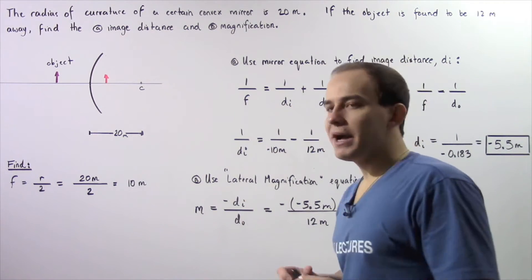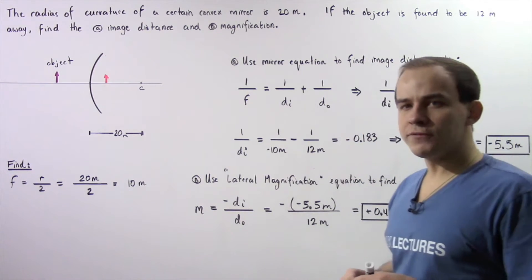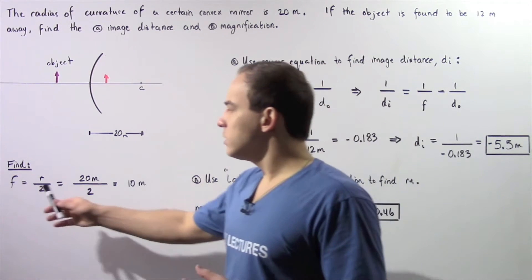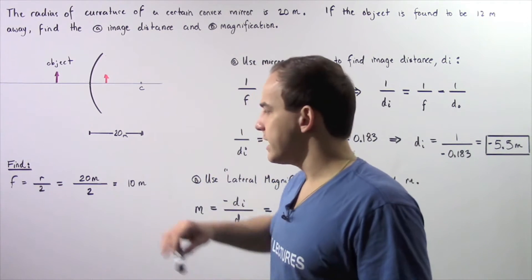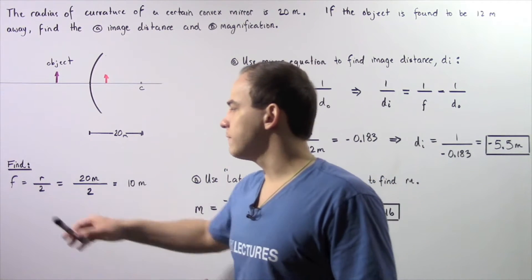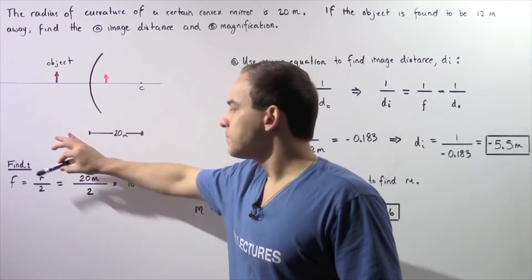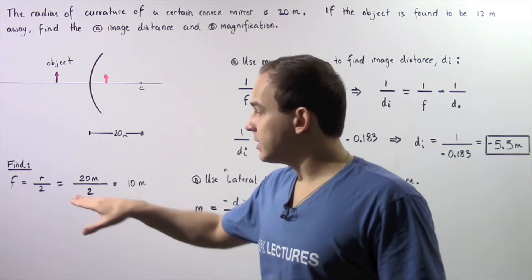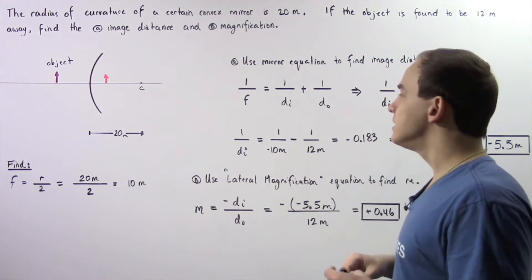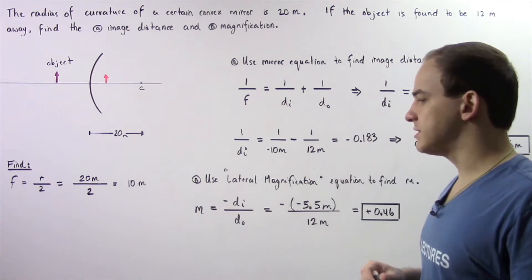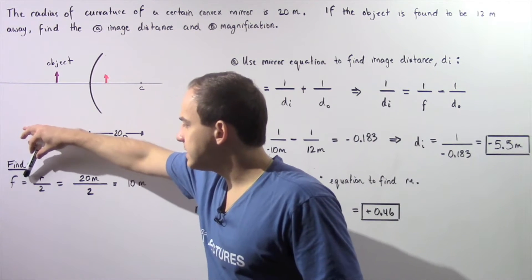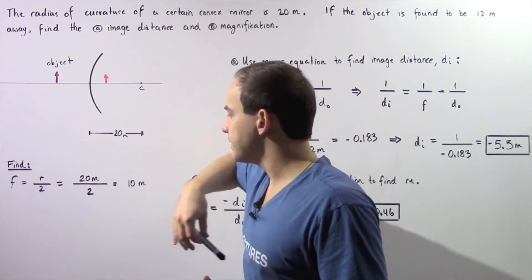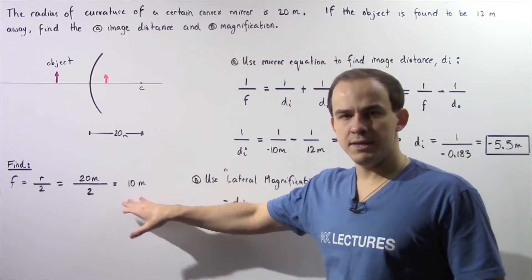Let's begin by using the radius of curvature to determine what the focal length is. The focal length is related to the radius of curvature via the following equation: the focal length F is equal to R divided by 2. We need the focal length because we'll use it in part A to calculate the image distance. So F = R/2 = 20 meters / 2, giving us a focal length of 10 meters.